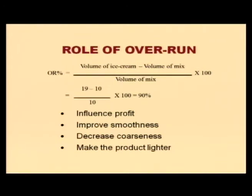The last property is overrun. What is overrun? When we prepare ice cream, we incorporate air. Suppose we have taken 100 ml of mix and we incorporate air and it becomes 200 ml — the excess 100 ml is overrun, meaning air. It is calculated as: percent overrun = (volume of ice cream minus volume of mix) divided by volume of mix, multiplied by 100.